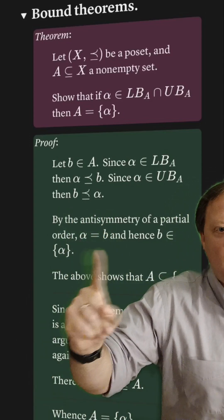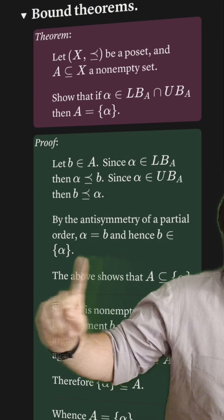By anti-symmetry, alpha equals b, and it follows trivially that b is in the singleton.